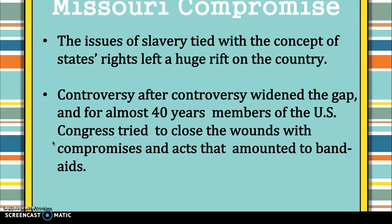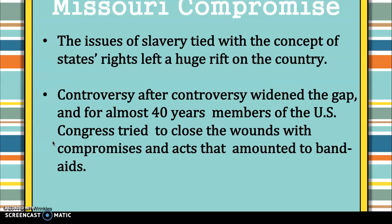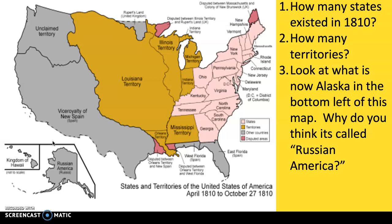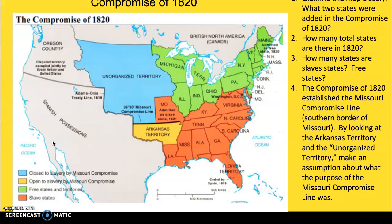So the Missouri Compromise. This involves issues revolving around slavery and tying in with the concept of states' rights. You have controversy after controversy widening the gap — for forty years, members of Congress tried to close those wounds, but they were doing it with Band-Aids. Look at the first compromise in 1820 — examine the map closely. What two states were added in the Compromise of 1820?